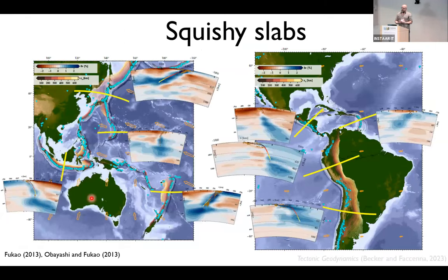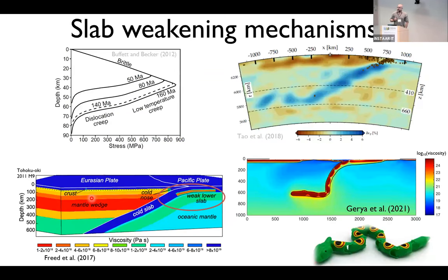slabs may overall not be very strong. Based on temperature dependence alone, they would be, you know, orders of magnitude, many orders of magnitude stronger than the mantle. But it appears that there's some process of reducing the strength in the bending plate. And if we look in seismic tomography, slabs are bent, you know, they're sort of squishy.